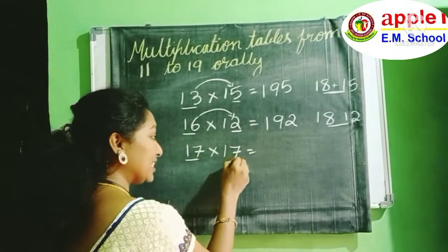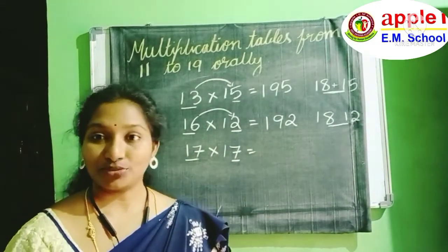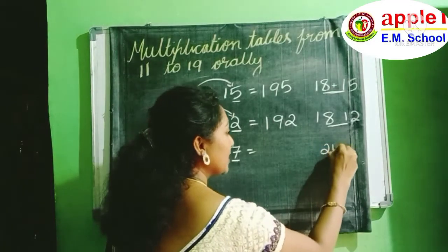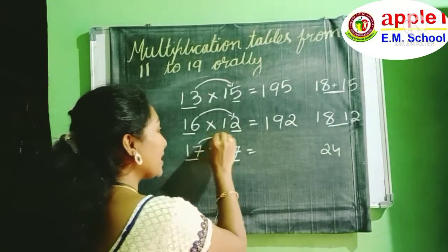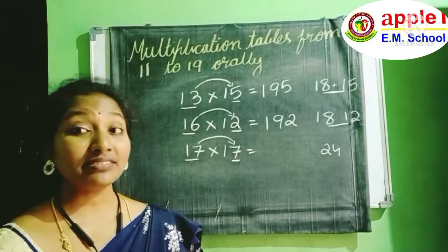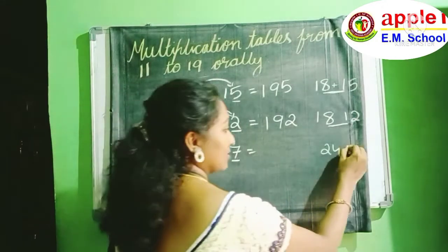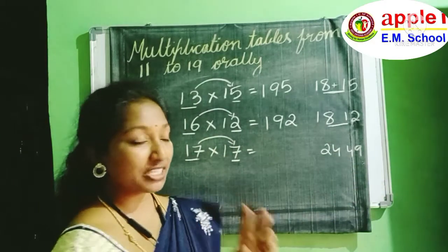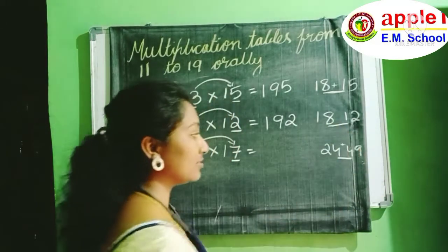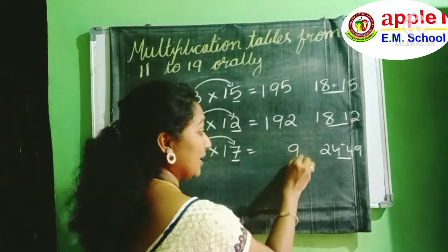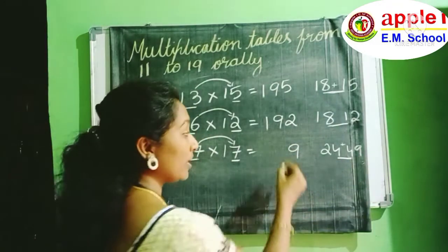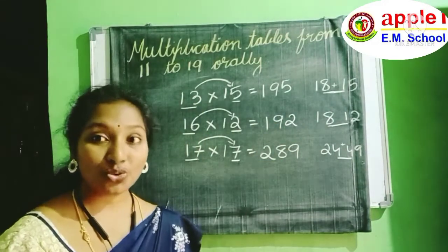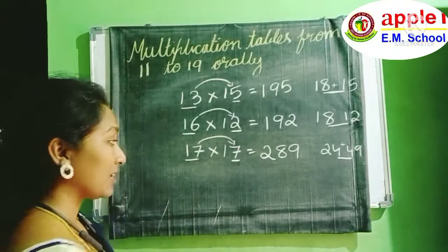Next: 17 into 17. What is the first step? For 17, add 7. 17 plus 7 is 24. And multiply the ones place digits: 7 sevens are 49. Here 49 is a double digit number, so add the middle two digits. Ones place is 9, tens place is 4 plus 4 which is 8, hundreds place is 2. Answer is 289.